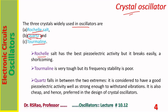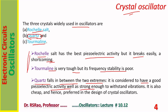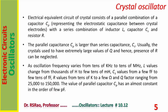Rochelle salt has the best piezoelectric activity but it breaks easily — that is a shortcoming. Tourmaline is very tough but its frequency stability is poor. So both are associated with shortcomings. Quartz falls between the two extremes: it has good piezoelectric activity, is strong enough to withstand vibrations, and is also cheap. Hence quartz is preferred in the design of crystal oscillators.